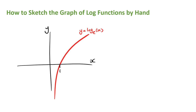The main feature of the log function is that it has a vertical asymptote, and for the basic function this is going to be the line x is equal to zero. The curve lies to the right of the asymptote and approaches infinity as the values of x increase, and approaches the vertical asymptote as the values of x decrease. Also it has an x intercept at 1.